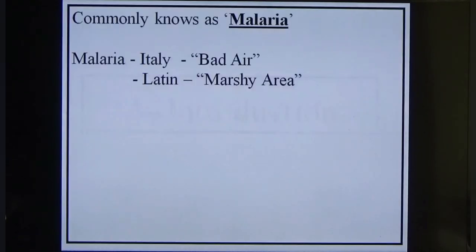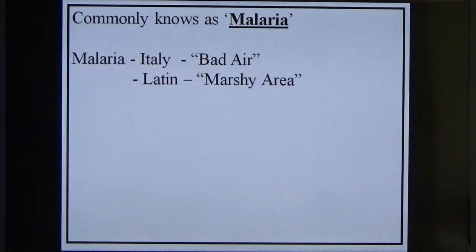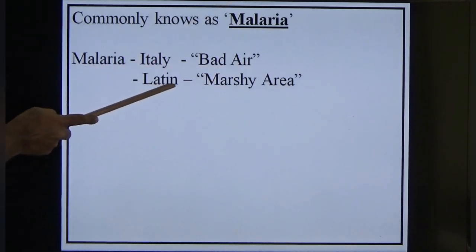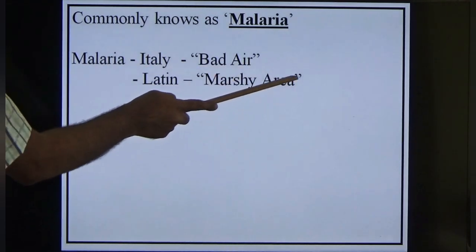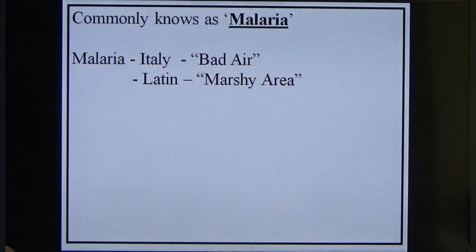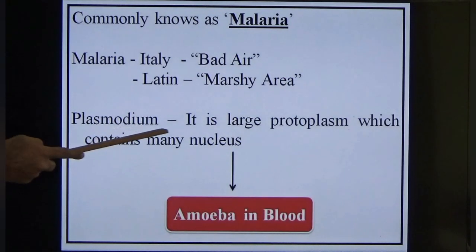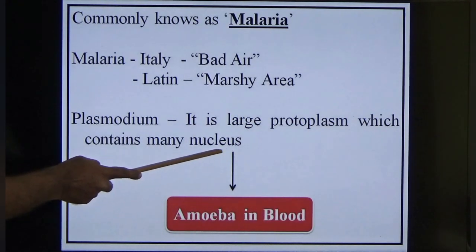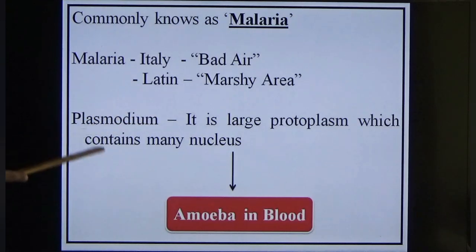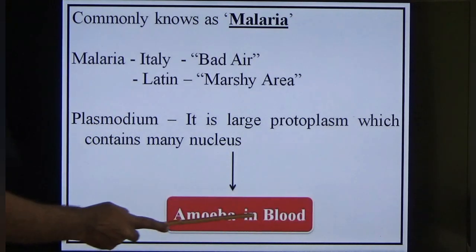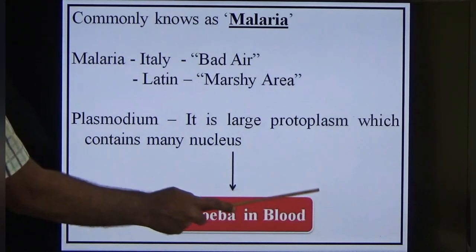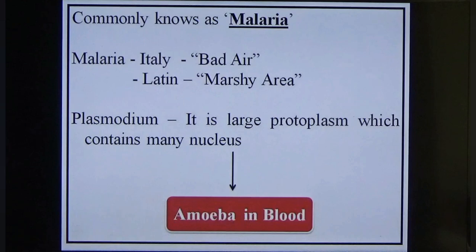Plasmodium is commonly known as malaria. The word malaria in Italian means 'bad air' and in Latin it means 'marshy area' — it is developed in marshy areas, so the name is kept as marshy area. Plasmodium, by word meaning, is a large protoplasm which contains many nuclei. Simply put, it is the amoeba in the blood, whereas amoeba is usually found in the intestine.